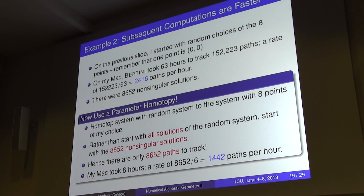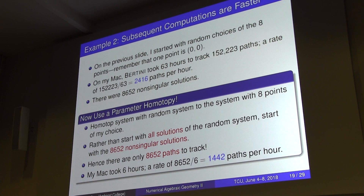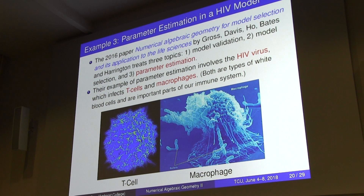Now I want to talk about parameter estimation in the HIV model, based on the paper 'Numerical Algebraic Geometry for Model Selection and Application to the Life Sciences' by Elizabeth Gross and Dan Bates, written for a non-mathematical audience. They discuss model validation, model selection, and parameter estimation — the last of which I'll focus on here.